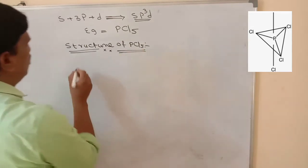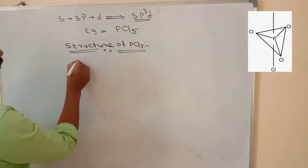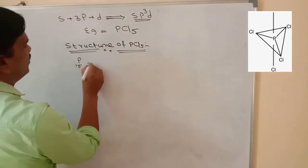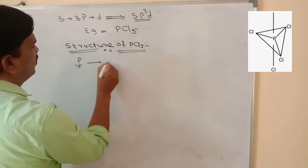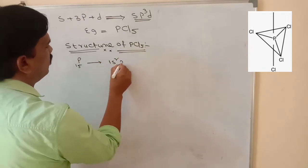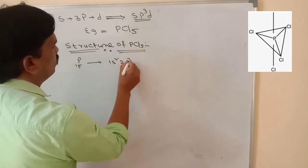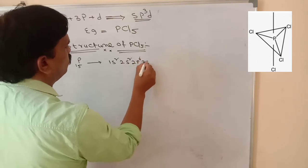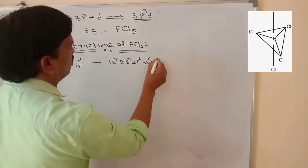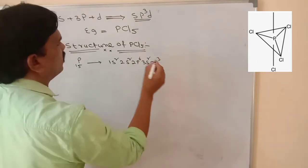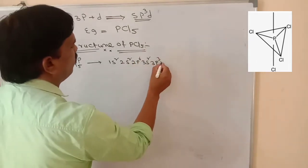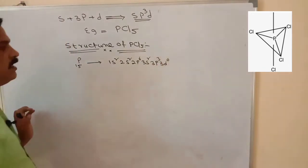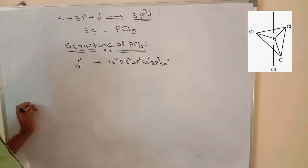In phosphorus pentachloride, phosphorus has atomic number 15 and its electronic configuration is 1s2, 2s2, 2p6, 3s2, 3p3. After 3p3, there is 3d0 — there are no electrons in the 3d orbital.